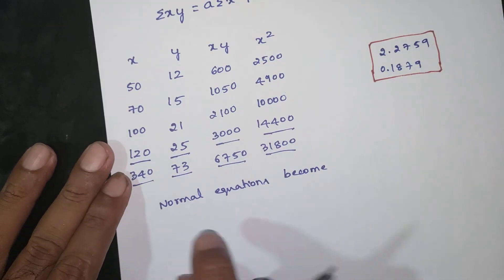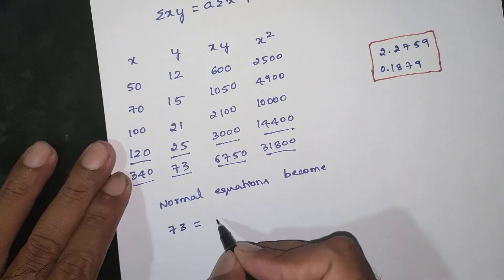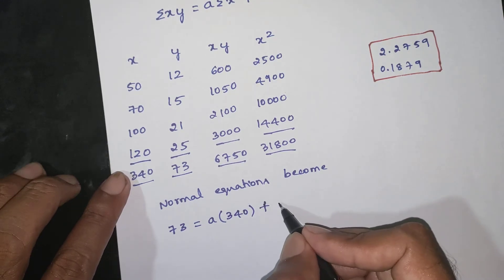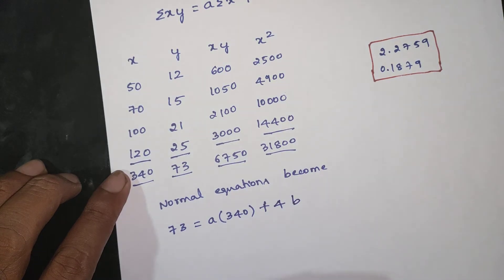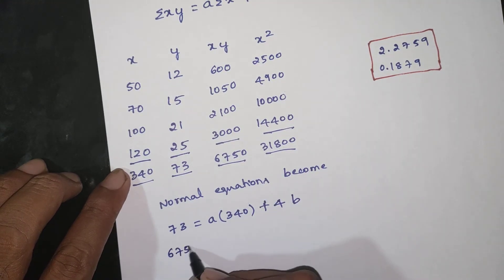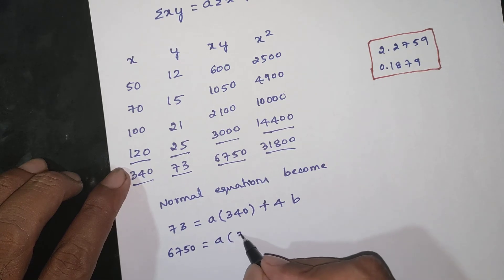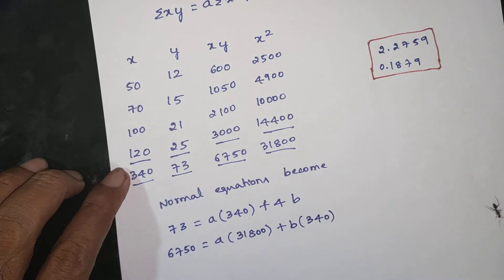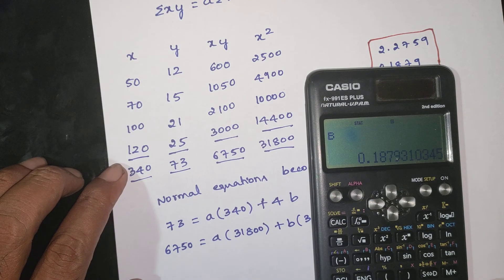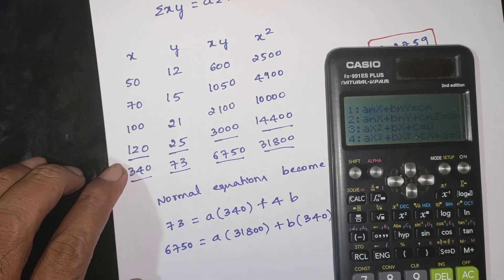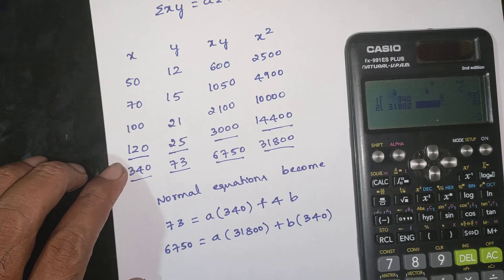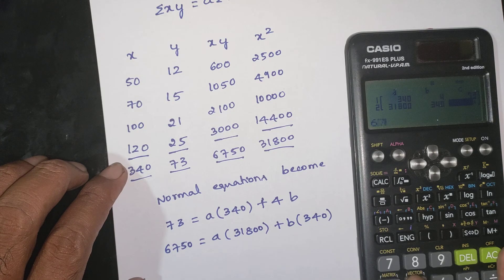Summation of y = 73. A into summation of x = 340, plus n = 4, times b. Summation of xy = 6750. A into summation of x squared = 31,800, plus b into summation of x = 340.